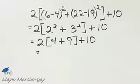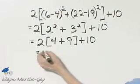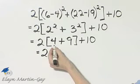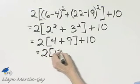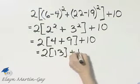Let's see what we have now. 4 plus 9. We'll finish within the set of brackets. That's 4 plus 9 or 13 plus 10.